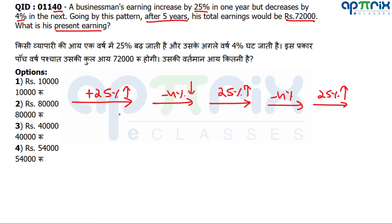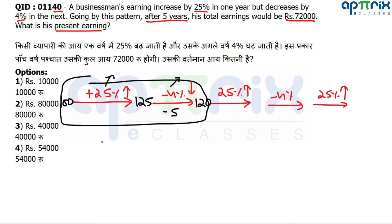Let's understand the combined impact of 25% increase and 4% decrease. Assume value 100: after 25% increase → 125. Then 4% decrease of 125 = 5. So 125 − 5 = 120. So the cumulative impact of one 25% increase and one 4% decrease is effectively a 20% net increase.